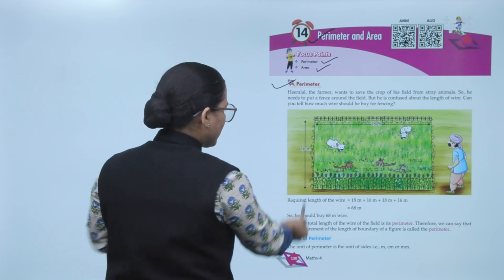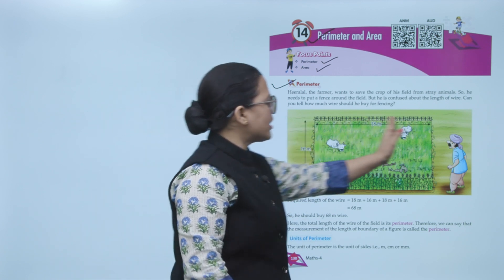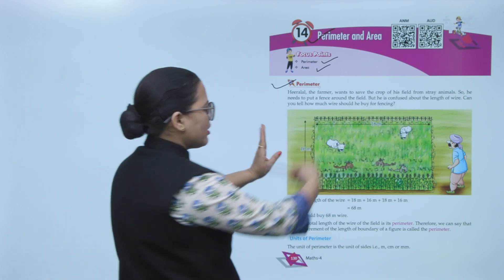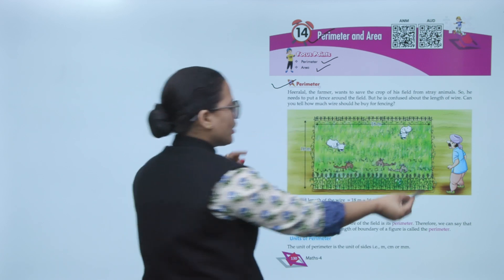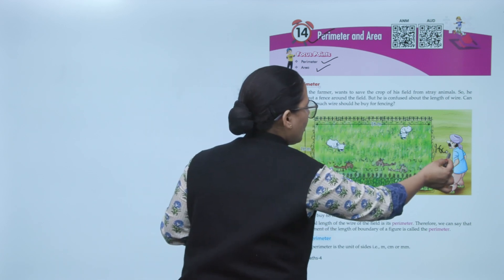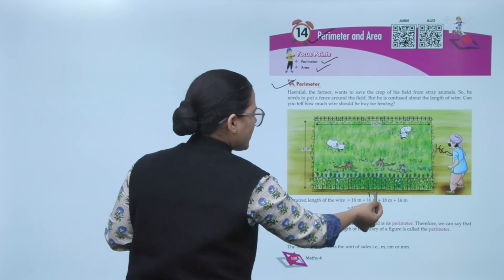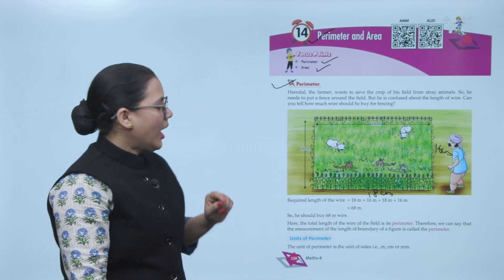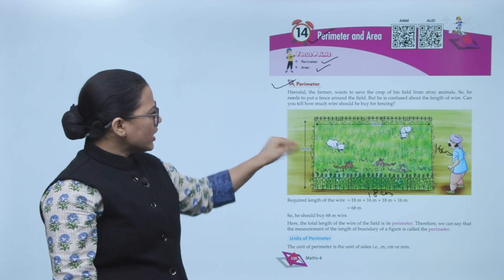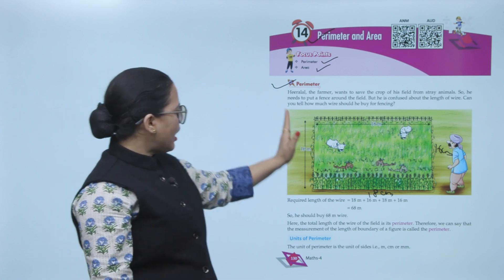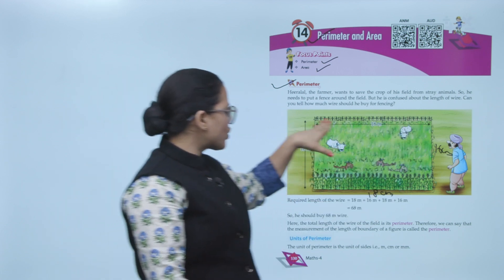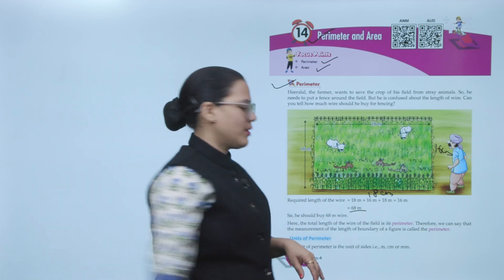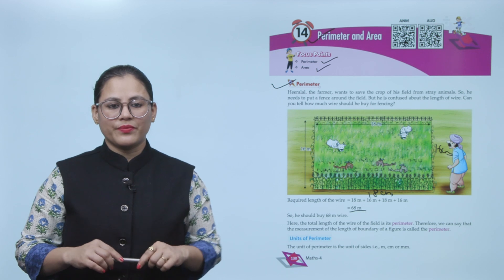You have been given the length of 16 cm and 18 cm. This side is 16 cm. Since it's a rectangle, the opposite side will also be 16 cm, and 18 cm for the other sides. The required length of wire is 68 meters, so he should buy 68 meters of wire.